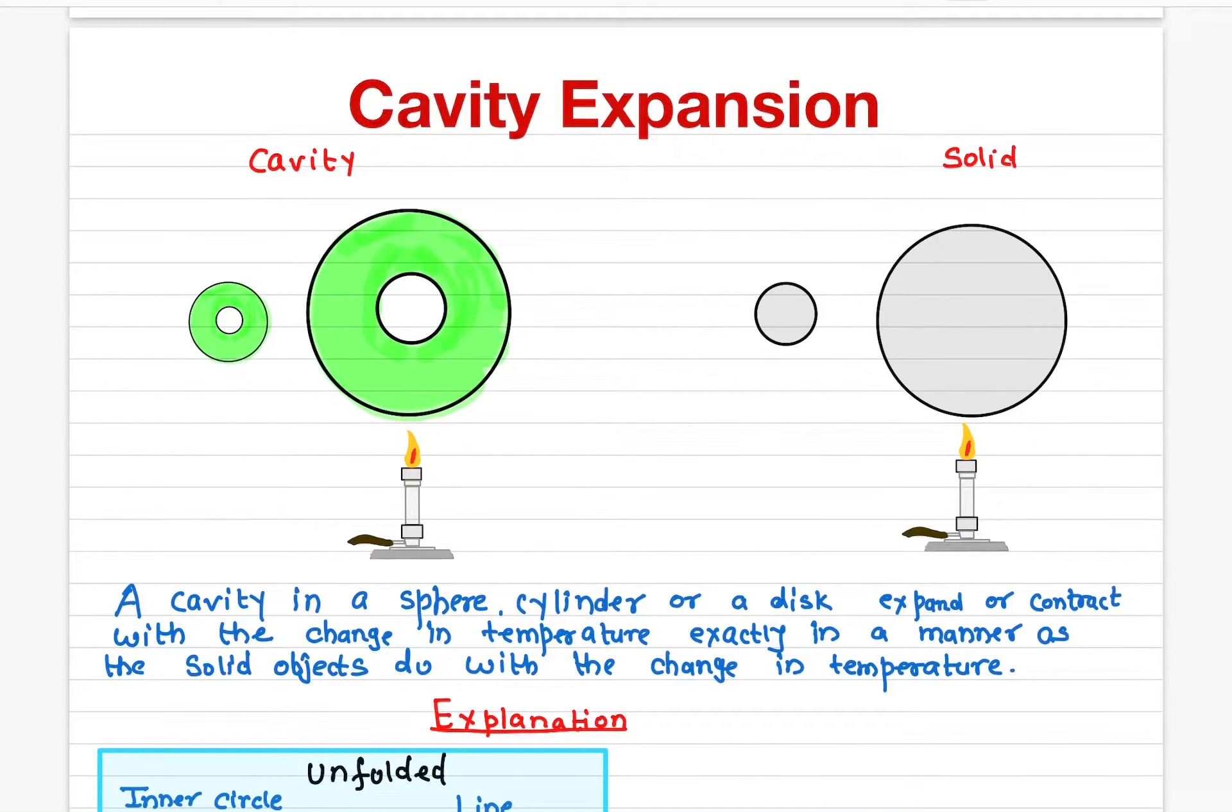When I say the beta or coefficient of volume expansion is positive, that means when you increase the temperature it also increases. For most materials it does happen, but there are some other materials which instead of expanding with the temperature, it decreases in size with the increase in temperature.